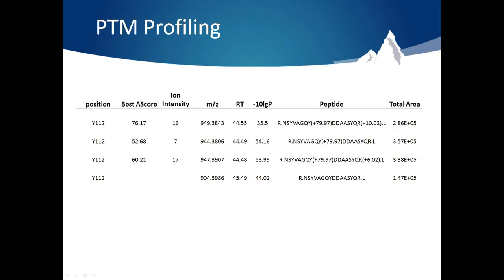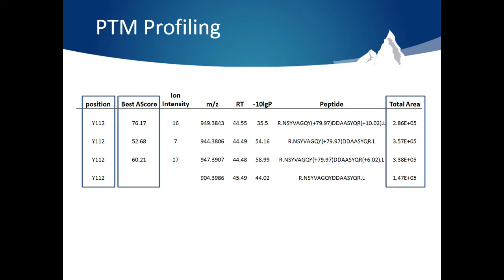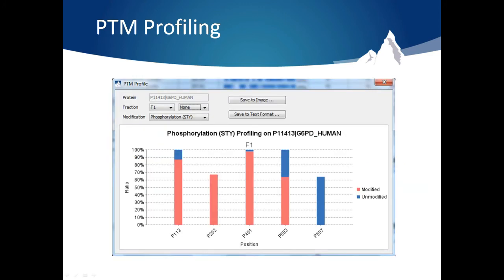It will also repeat this for all of the modified and unmodified peptides found at this position in the protein. This table shows all of the modified and unmodified peptides which are found at this position. The A-scores are reported for each modified peptide, and the peptide feature area is given as well. Using this information, PEAKS creates a bar chart that gives a ratio of the relative quantity of phosphorylated peptide versus unphosphorylated peptide at each identified phosphorylation position. Only fully digested peptides are used in this chart to give added accuracy.